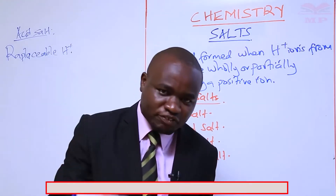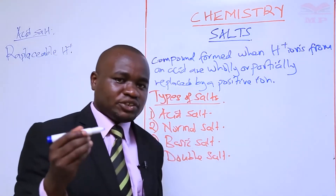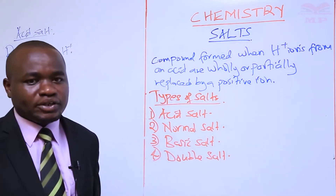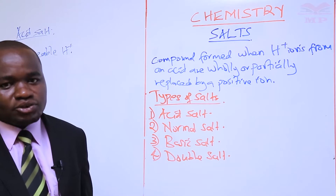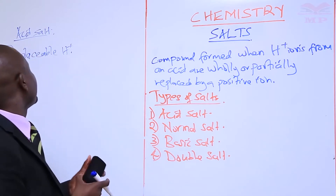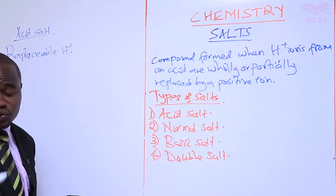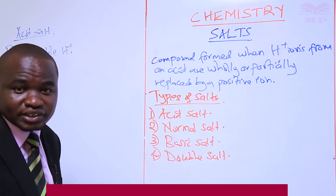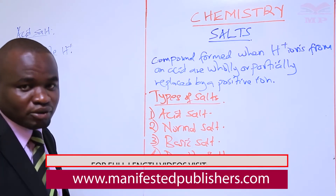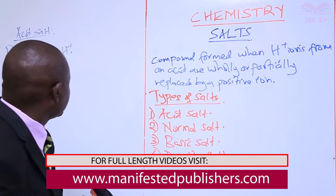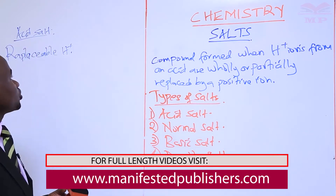An acid salt is identified by the presence of a hydrogen ion. An acid salt can be defined as a salt that contains a replaceable hydrogen ion.